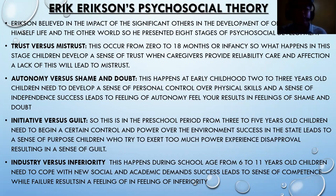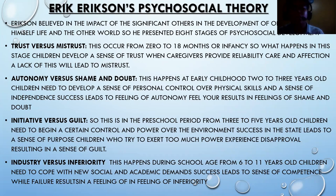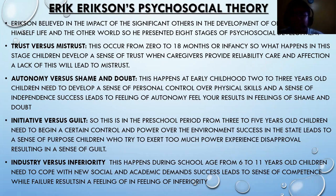Initiative versus guilt occurs during the preschool period, from three to five years old. Children need to begin exerting control and power over their environment. Success leads to a sense of purpose, while children who exert too much power experience disapproval, resulting in guilt. Industry versus inferiority occurs during school age, from six to eleven years old. Children need to cope with new social and academic demands. Success leads to a sense of competence, while failure results in feelings of inferiority.